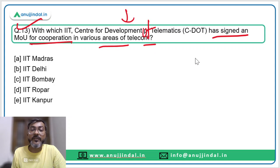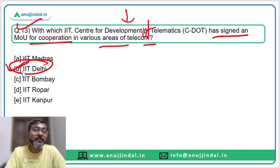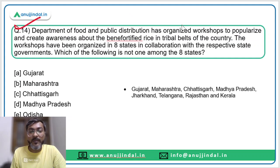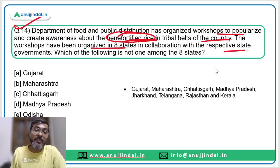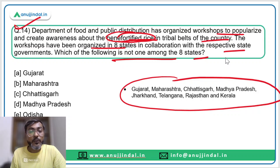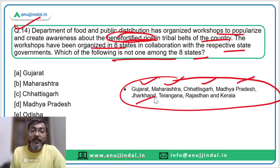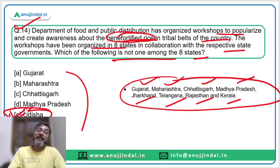Question thirteen: with which IIT has C-DOT — Centre for Development of Telematics — signed an MoU for cooperation in various areas of telecom? The answer is IIT Delhi — option B. The last question: the Department of Food and Public Distribution organized workshops to create awareness about the benefits of fortified rice in tribal belts of the country. Workshops were held in eight states — Gujarat, Maharashtra, Chhattisgarh, Madhya Pradesh, Jharkhand, Telangana, Rajasthan, and Kerala — in collaboration with respective state governments. The state not among the eight is Odisha — option E is the correct answer.